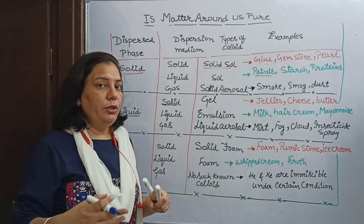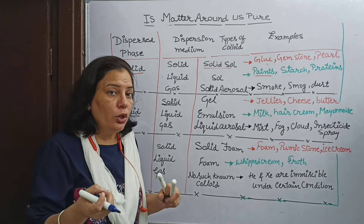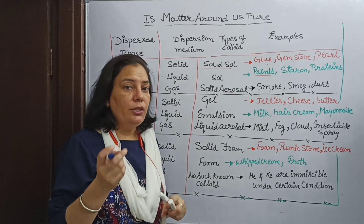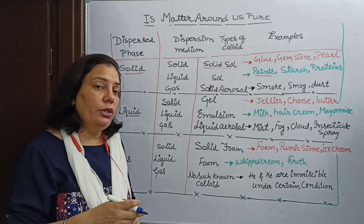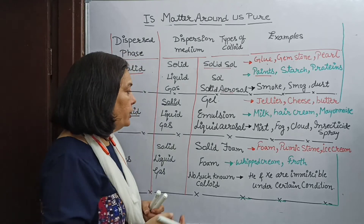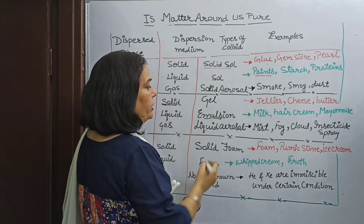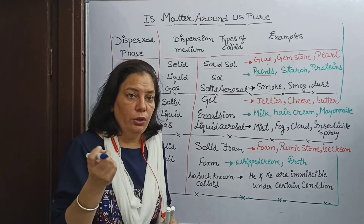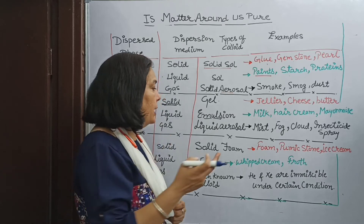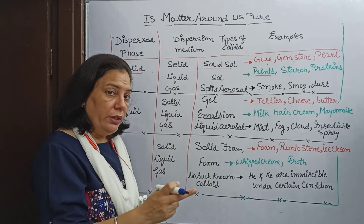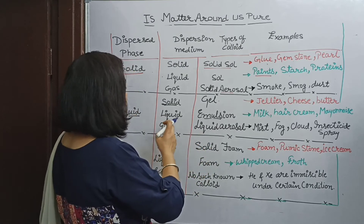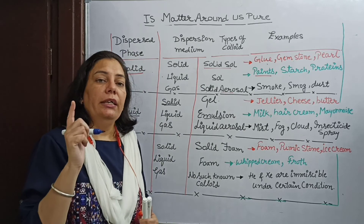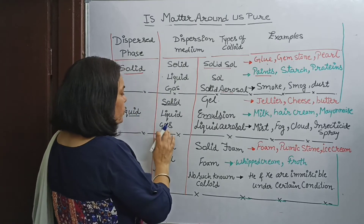So next time you purchase butter or cheese, remember you are buying a gel — that type of colloidal solution. When liquid dissolves in liquid — and these two liquids must be immiscible — this type of colloidal solution is called emulsion. Examples are milk, hair cream, and mayonnaise. In emulsion, both the dispersed phase and dispersing medium are in liquid state, but they are immiscible liquids.